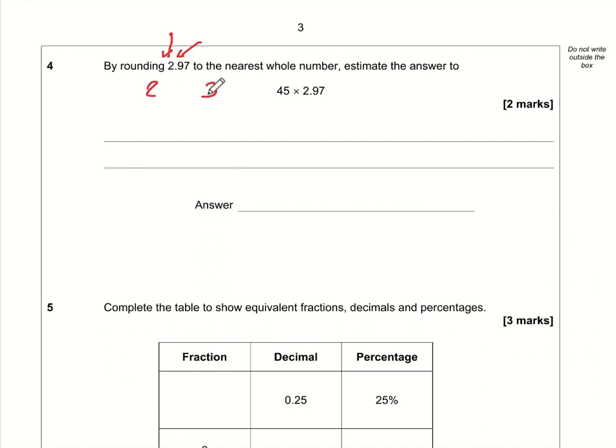Or you can think of it as, this number here 2.97 is between two and three. Is it closer to two or three? Well it's 2.9 so it's much closer to three than two, so we're going to round it up to three.